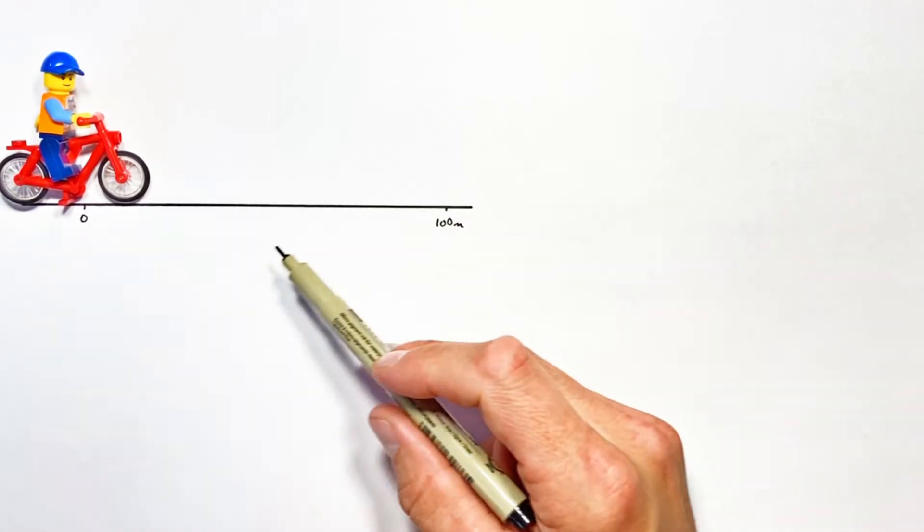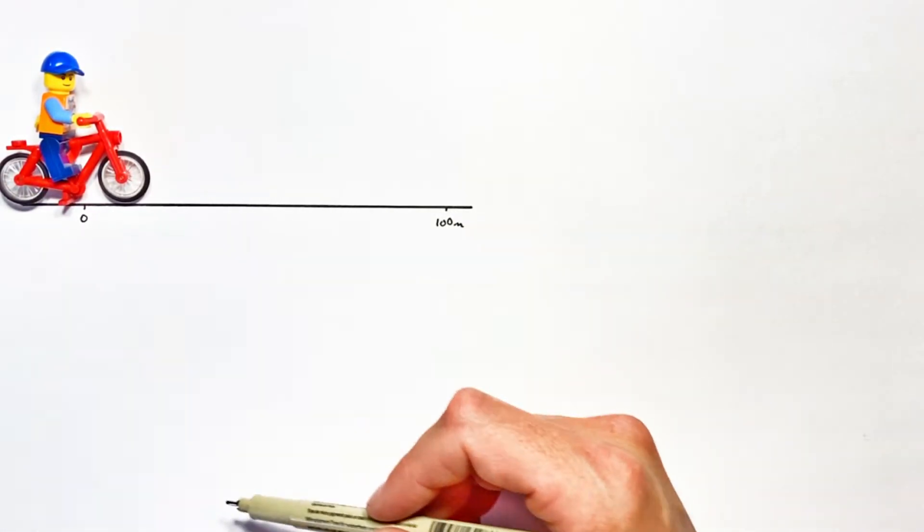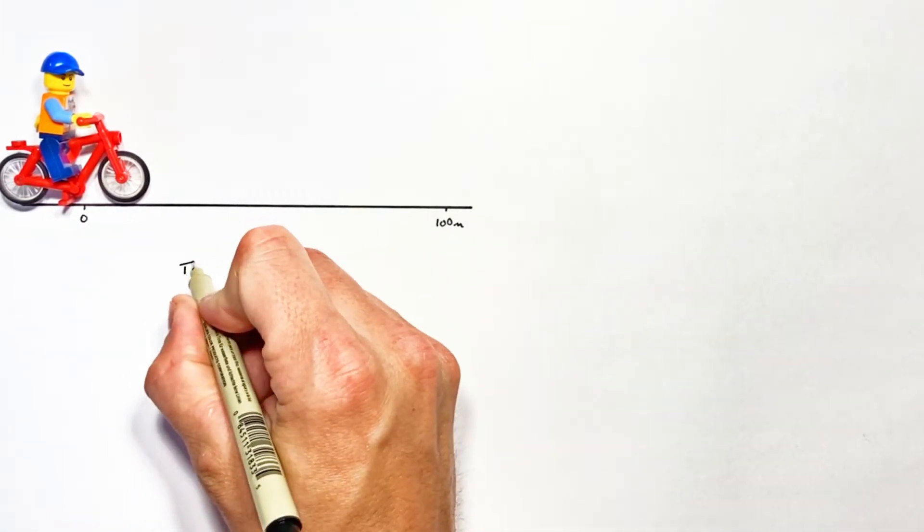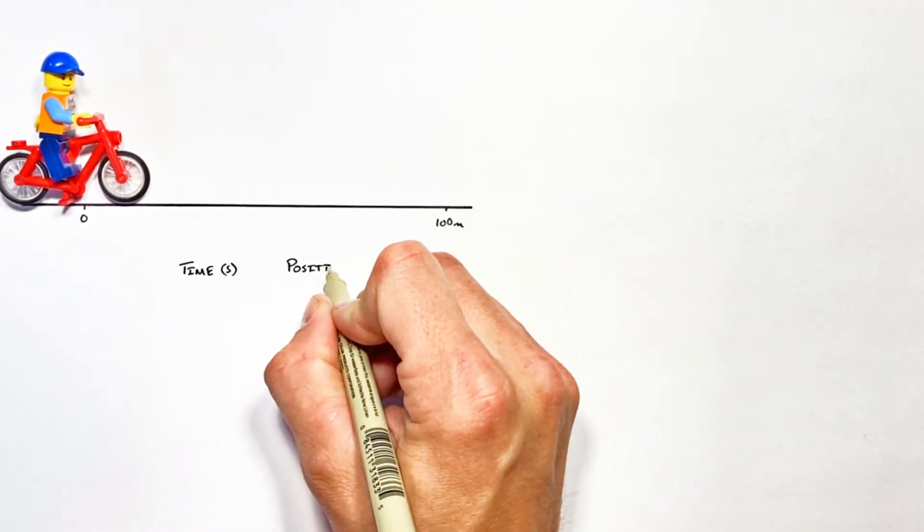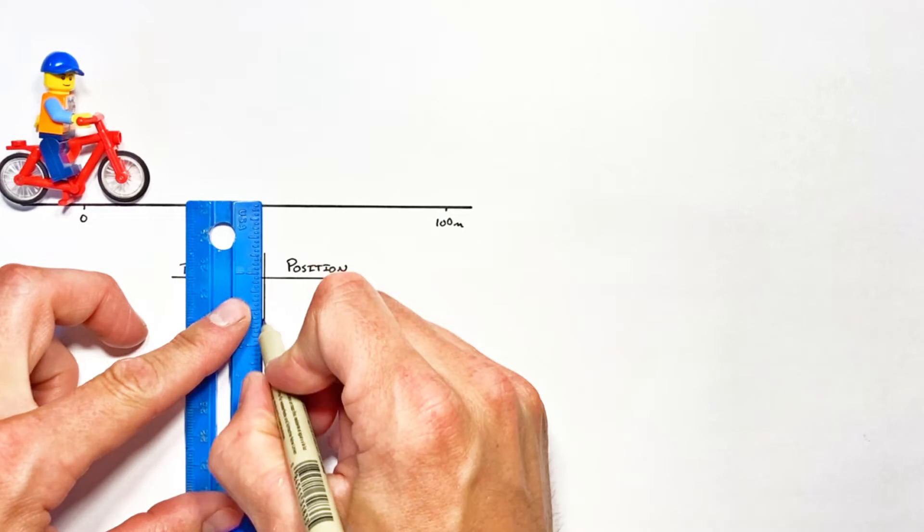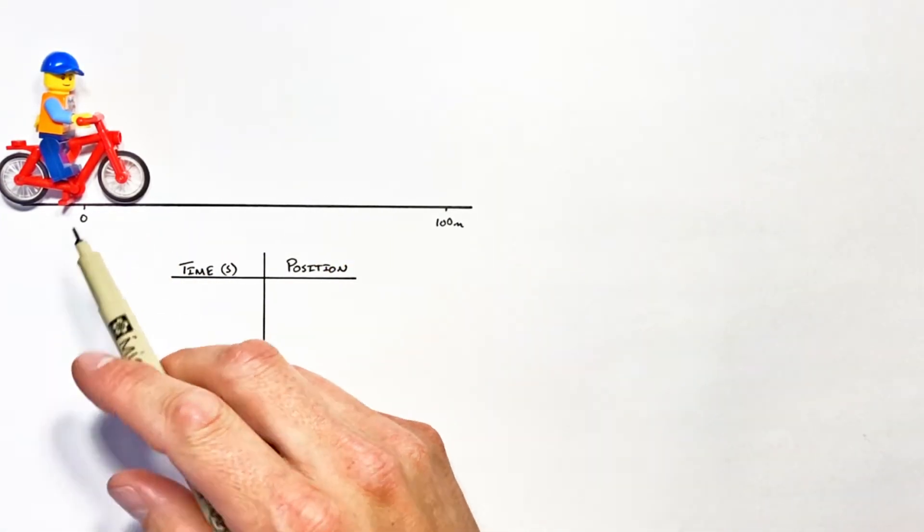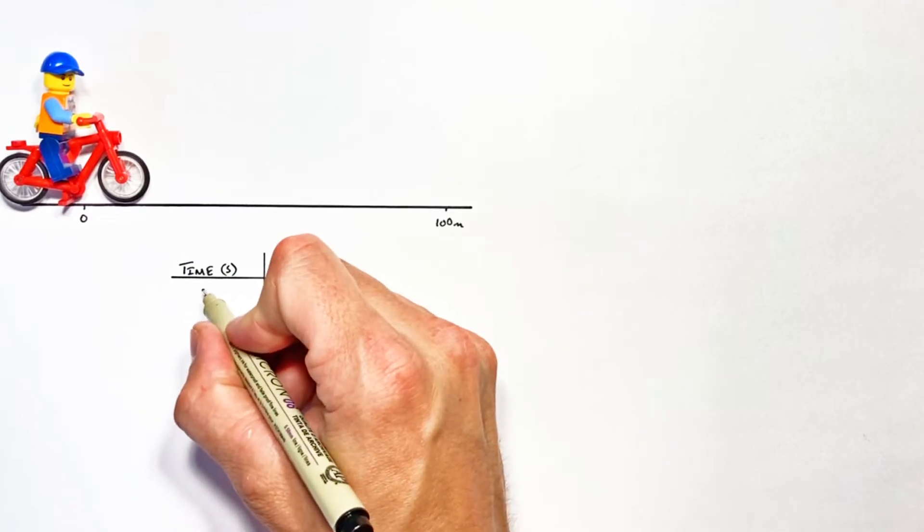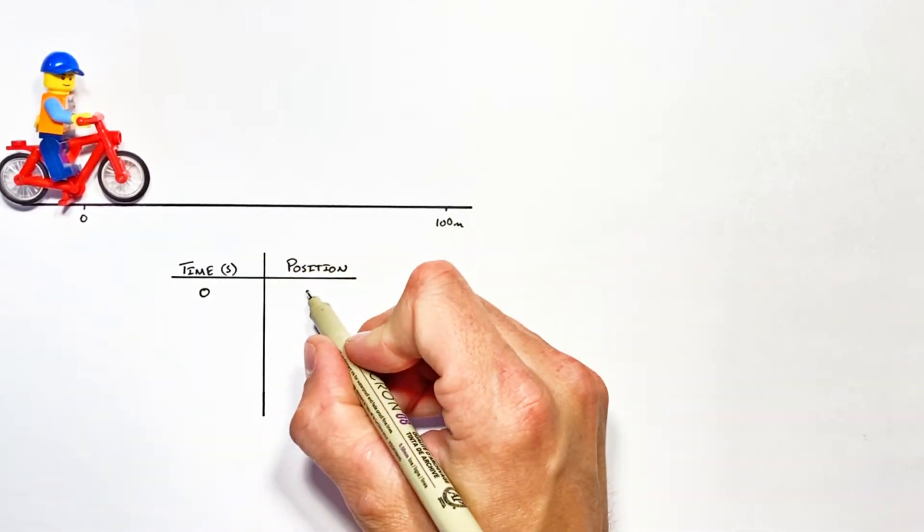So let's let the little guy move around here and we're gonna make up some data which we can then turn into a graph over here. Alright so let's say we've got a little stopwatch out and we hit that stopwatch the second this dude starts moving. That means that at time of zero he's at a position of zero.